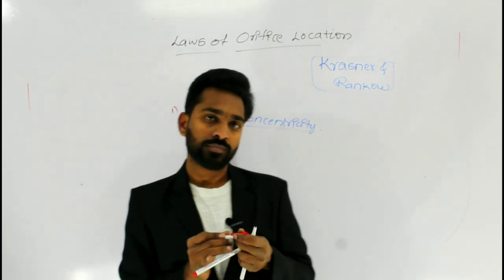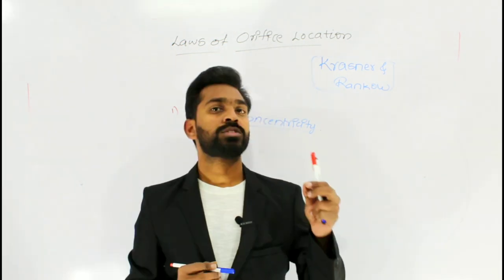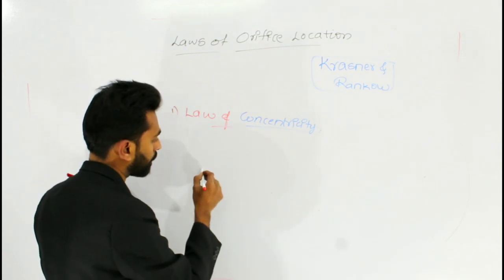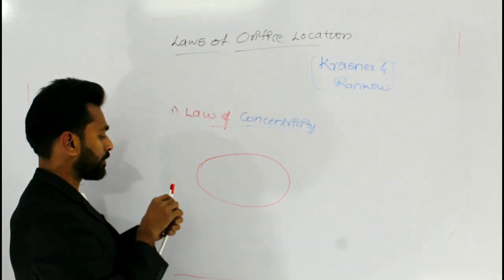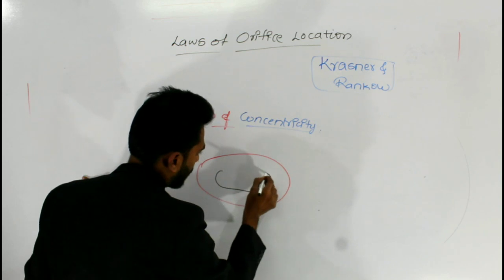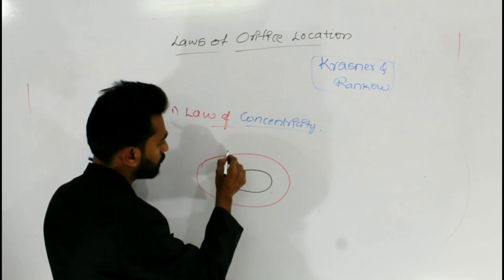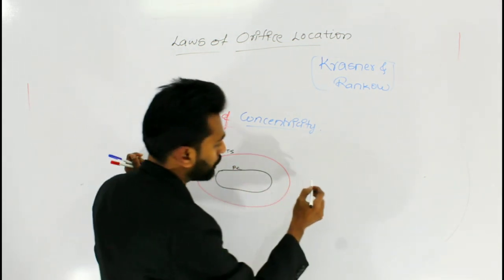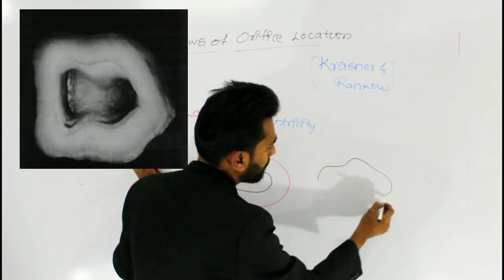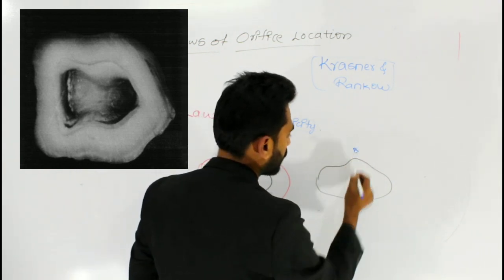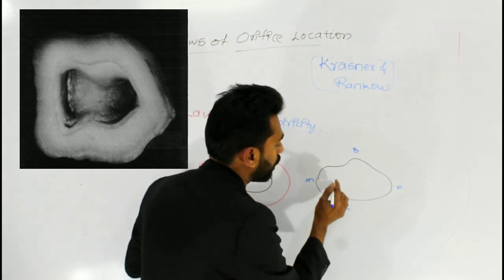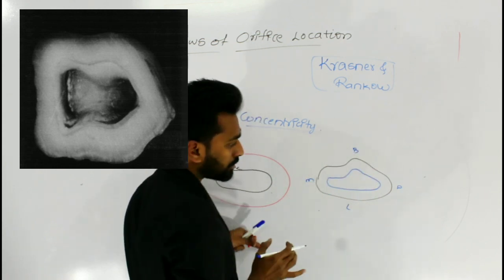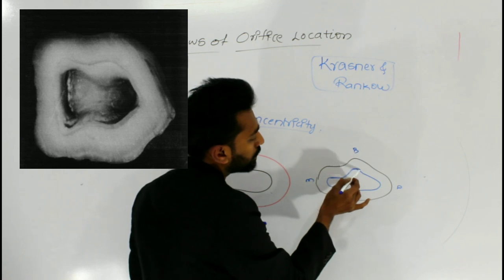Coming to the law of concentricity: this law states that if you take a section at the CEJ, the pulp chamber walls are always concentric to the external tooth surface wall. There is an external tooth surface and a pulp chamber wall; the pulp chamber wall always follows the tooth surface outline. So if there is a bulge on the buccal side, you can see a similar bulge in the pulp chamber.